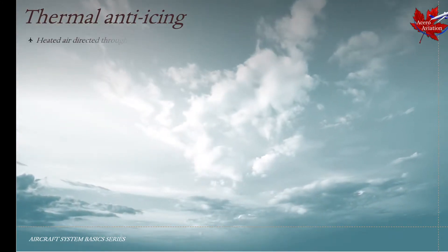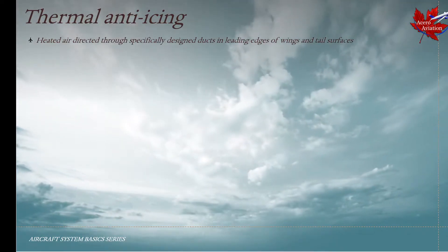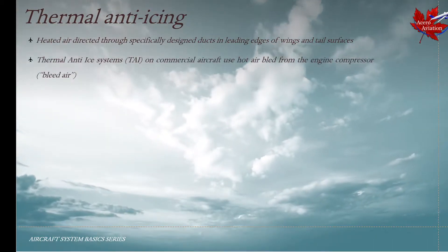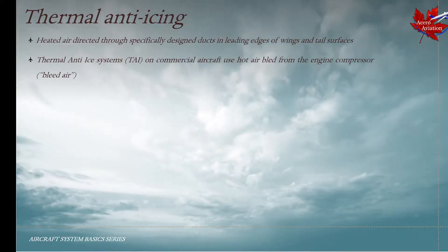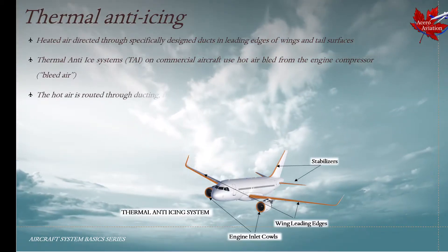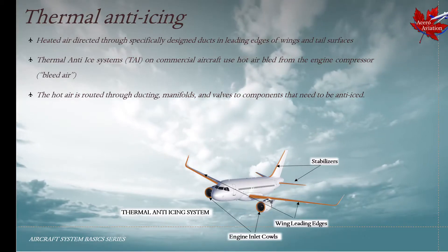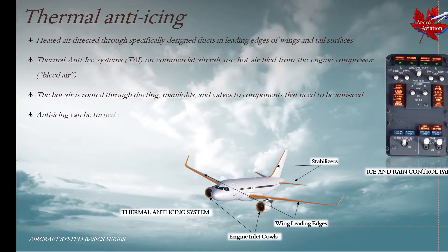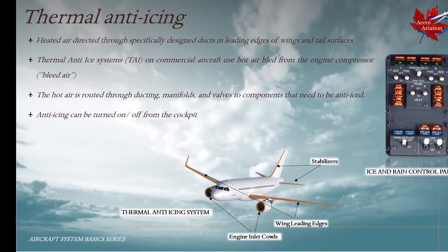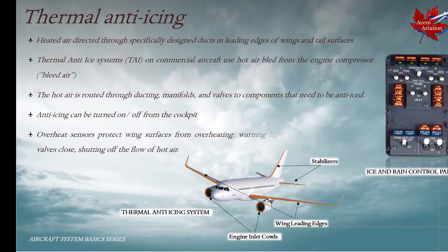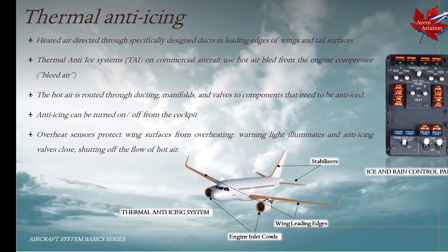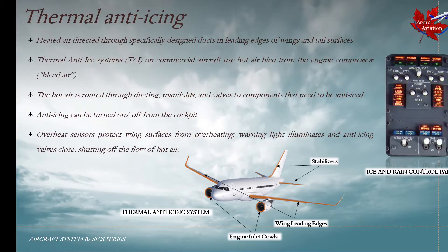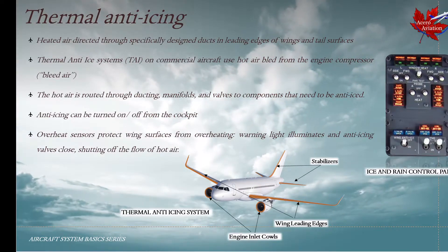We shall discuss thermal anti-icing next. Thermal anti-ice systems on commercial aircraft use hot air bled from the engine compressor. The hot air is routed through ducting, manifolds, and valves to components that need to be anti-iced, as can be seen in this graphic. Anti-icing systems can be turned on and off from the cockpit using the ice and rain control panel. Overheat sensors are also installed to protect wing surfaces from overheating. A warning light would illuminate in the cockpit and the anti-icing valves would close, shutting off the flow of hot air. When the surfaces have sufficiently cooled down, the valves reopen and resume heating of these surfaces.